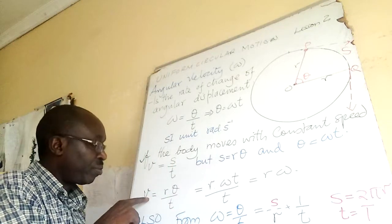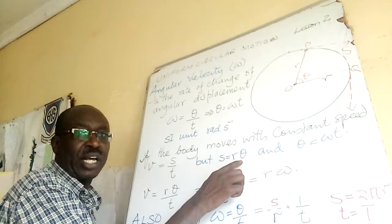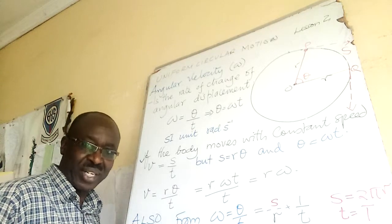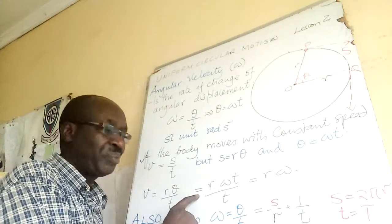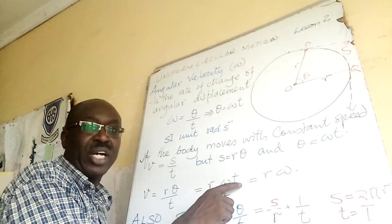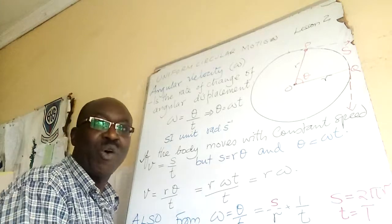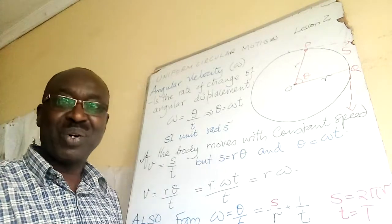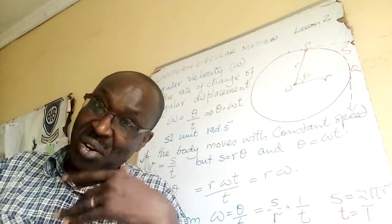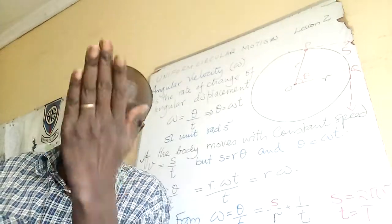Since theta divided by t gives omega, substituting theta with omega times t in the expression R times theta over t, the t cancels and we get V equals R times omega. This is the relationship between linear speed V and angular velocity omega.